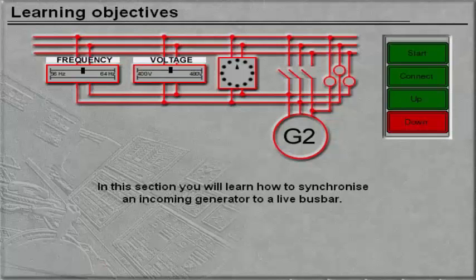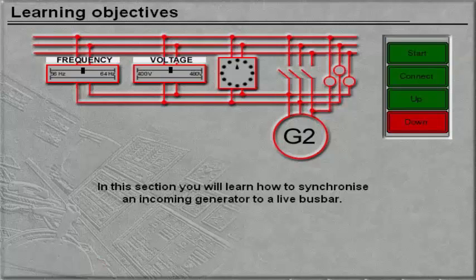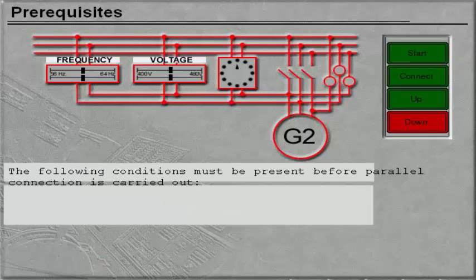In this section you will learn how to synchronize an incoming generator to a live bus bar. The following conditions must be present before parallel connection is carried out.